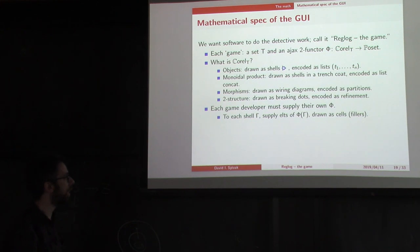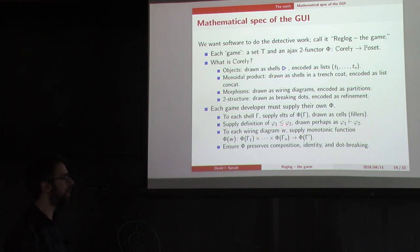The second part is that each game developer would need to supply their own fee. They're going to supply to each shell all of the possible fillers or cells that can go in there. They're going to supply what it means for one to be less than another. They're going to supply for each wiring diagram a monotonic function that takes a cell inside of gamma 1, a cell in gamma 2, and a cell in gamma n, and produces a cell outside. So they have to provide that function. And they have to ensure to us that their fee preserves composition, identity, dot breaking, etc.